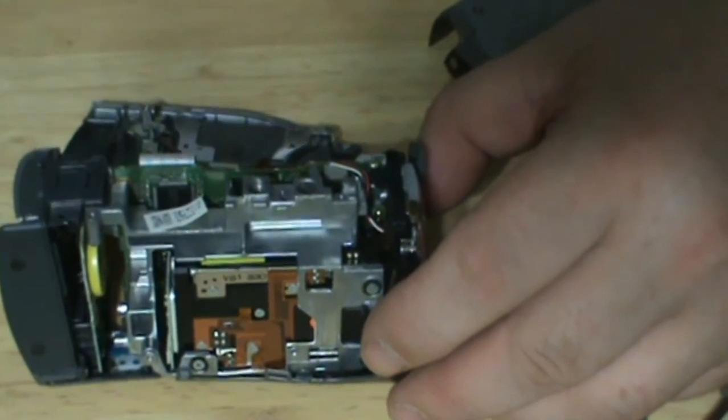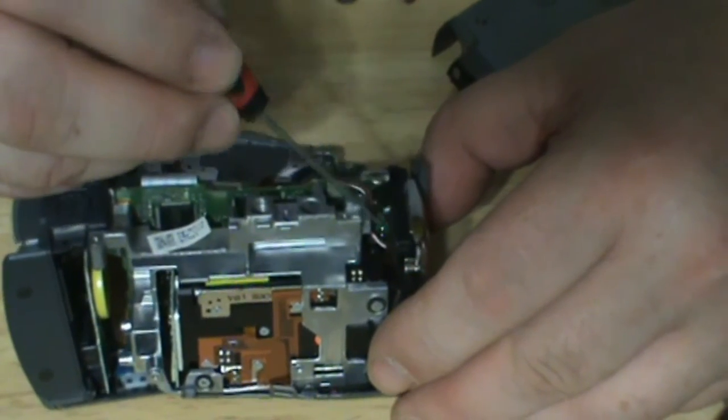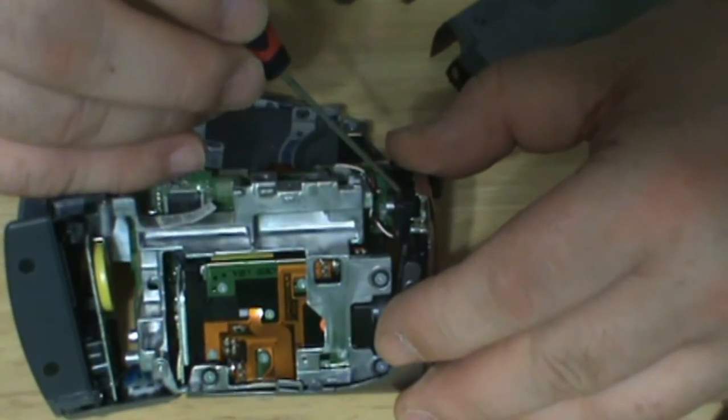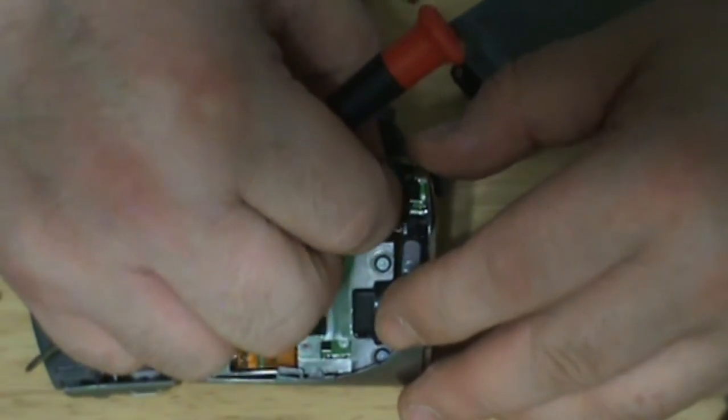Okay, so what we're going to notice is there's a piece of rubber right here. That little piece of rubber is what you're going to be working to get out. Don't mess around with any of the add-on pieces.